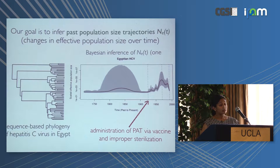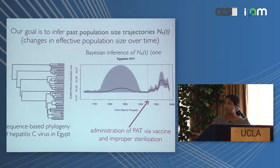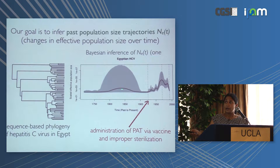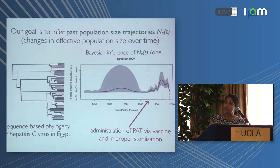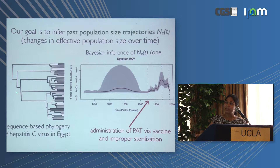Ne then went down in the 1970s when there was a transition to oral administration of the same therapy. The footprint of this improper sterilization still exists in Egypt — in 2014 it was estimated that 10% of the population between ages 15 and 60 have Hepatitis C, a signature we can recover from present-day sequences of the virus. One interesting thing to note is that measures of uncertainty are really large as we go further back in time, because we have fewer coalescent events and thus less information.